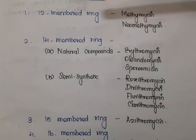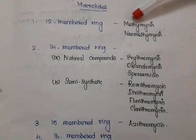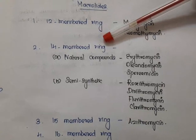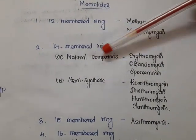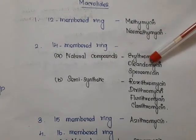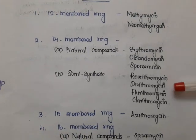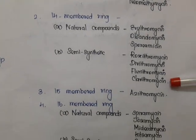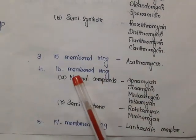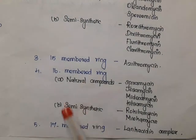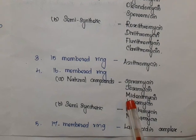For 12-membered macrocyclic rings, examples are methymycin and neomethymycin. For 14-membered rings, they are classified into natural and semi-synthetic: natural examples are erythromycin, oleandomycin, and spiramycin; semi-synthetic examples are roxithromycin, dirithromycin, flurithromycin, and clarithromycin. For 15-membered rings, the example is azithromycin.